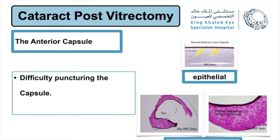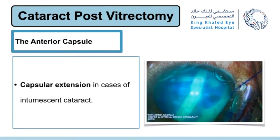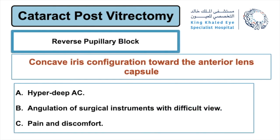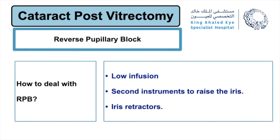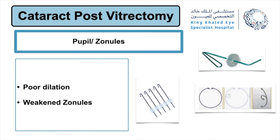The anterior capsule tends to be difficult to puncture, especially in the presence of silicone oil, which induces fibroblast and epithelial growth. The anterior capsule may extend and present as an Argentinian flag sign because of the intumescent white cataract. Reverse pupillary block can be seen in cataract post-vitrectomy — by definition it's a concave iris configuration toward the anterior lens capsule. The clinical picture is a hyper-deep anterior chamber with pain and discomfort, and difficult visualization due to angulation. Reverse pupillary block can be dealt with lower infusion, a second instrument to raise the iris, and iris retractors.